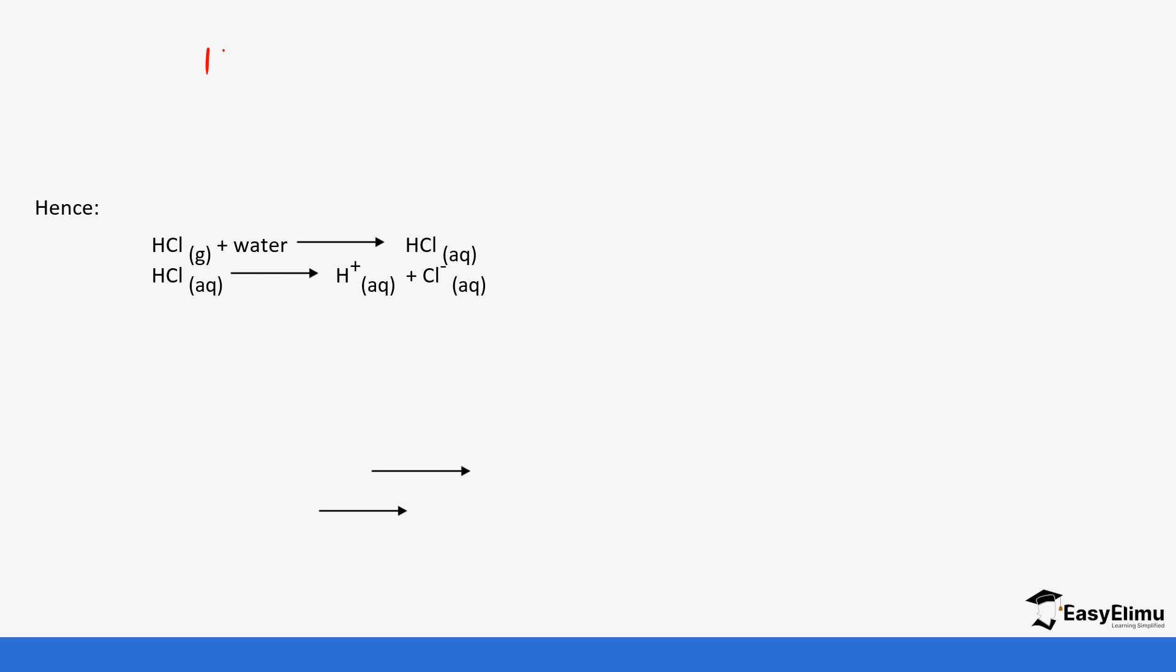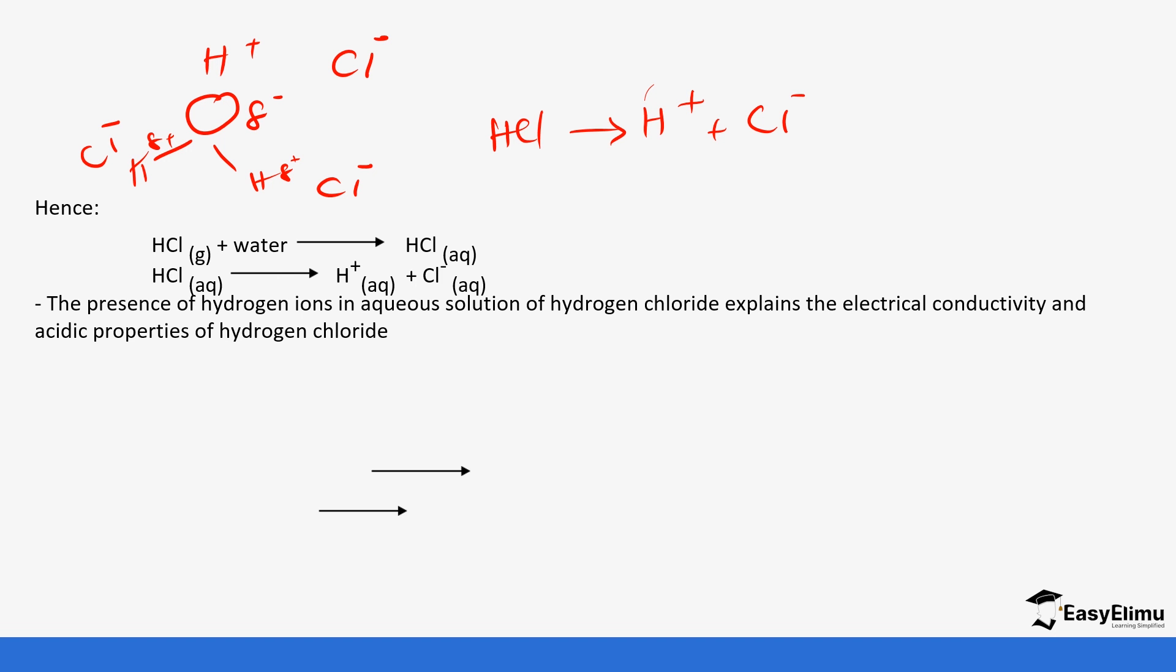We have the hydrogen ions and the chloride ions. The hydrogen ions are attracted to the partially negative oxygen, and the chloride ions are attracted to the hydrogen ions. So it causes it to dissociate. HCl dissociates to hydrogen ions and chloride ions, and these are attracted to the water molecules. So this causes them to dissociate. The presence of hydrogen ions in aqueous solution of hydrogen chloride explains the conductivity and the acidic properties of hydrogen chloride.